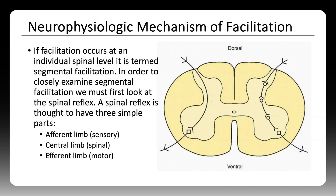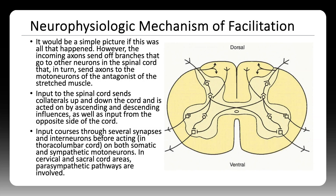At its core, facilitation involves a simple spinal reflex — afferent input, spinal processing, and efferent output. But in reality, incoming signals are distributed across multiple levels, affecting both motor and autonomic neurons through complex interneuron networks. These signals don't stay isolated; they send collaterals up and down the spinal cord, cross over to the contralateral side, and influence sympathetic or parasympathetic pathways depending on the region. This makes facilitation a multi-system issue.